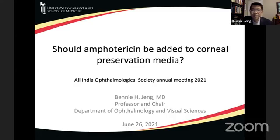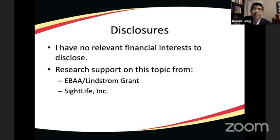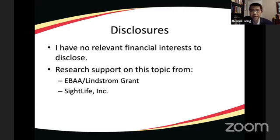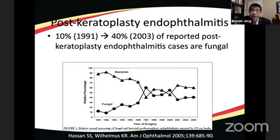I was asked — and actually volunteered — to talk about amphotericin. To answer whether we should add amphotericin into storage media, we need to see where the need lies. Going back to the early 1990s when they looked at post-keratoplasty infection, specifically endophthalmitis — back then 90% of cases were due to bacterial agents, with only 10% fungal. As the decade progressed, more fungal cases appeared relative to bacterial ones, and by 2003, 60% of cases were fungal in etiology.